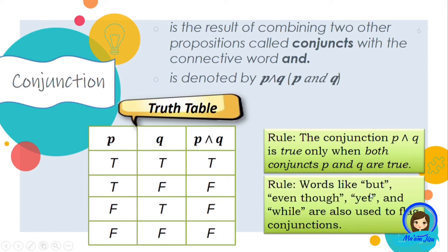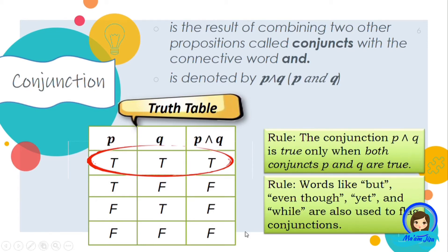Words like 'but,' 'even though,' 'yet,' and 'while' are also used to flag conjunctions — not only the word 'and.' So if you see these words, they also connote conjunction. It is only when both conjuncts are true that the conjunction of propositions P and Q is true.